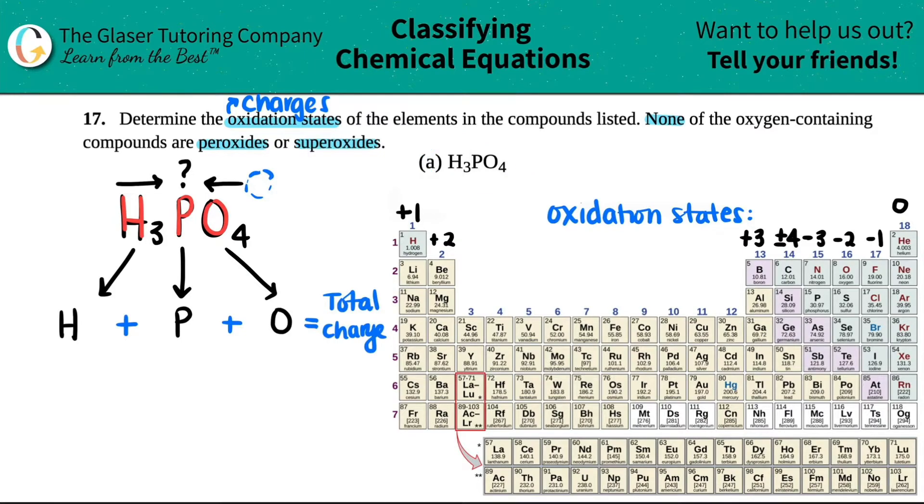But if we just look at this one, right, did we see any charge up here? No, right? There was no charge. So what does that mean in terms of a number, right? It was neutral. So what number was it? It was a zero. So I know that when these elements came together, they formed a molecule, they formed a compound that had a total charge of zero. Okay, so we know that information.